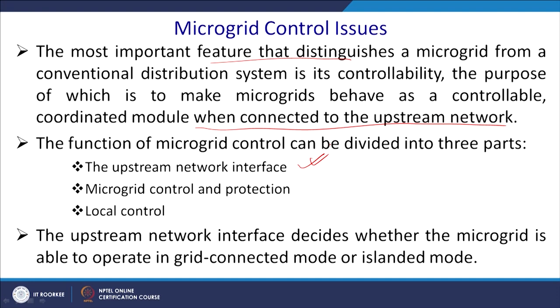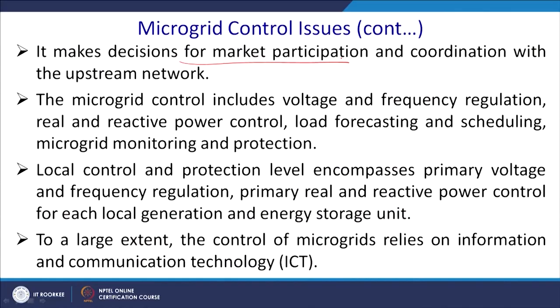The upstream network interface decides whether the microgrid is able to operate in grid-connected or islanding mode. Many solar inverters in India, when connected to the grid, dispatch power to the grid, but if power goes off suddenly, they have to stop and cannot feed local power. So one key capability a microgrid should have is that in islanding mode, it should be able to feed the local load. It also makes decisions for market participation — whether to sell power to the main grid — and coordination with the upstream network regarding power quality.